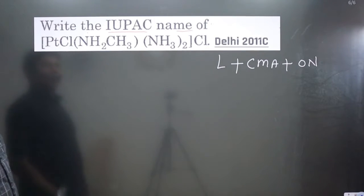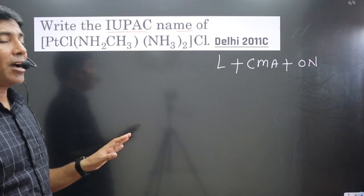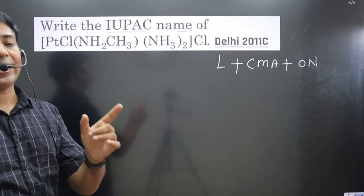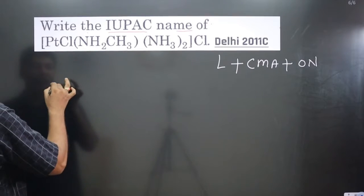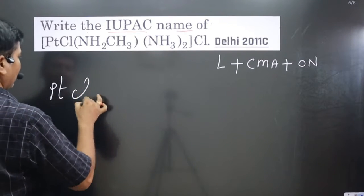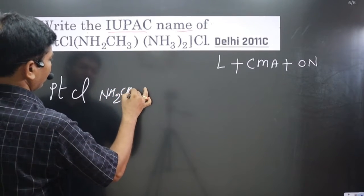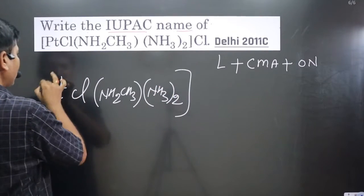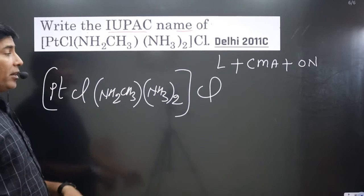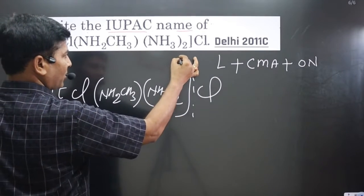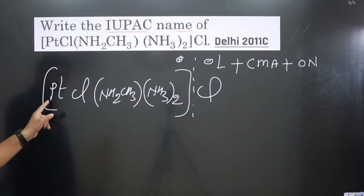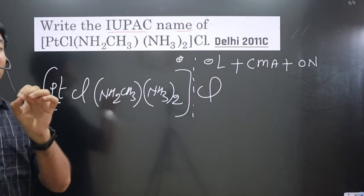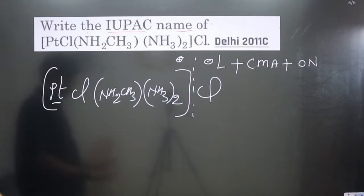Before writing the name, always identify if the central metal atom is present in the cationic complex or anionic complex. We have platinum, with Cl, NH₂CH₃ methylamine, NH₃ twice, and another Cl. We can dissociate the counter ion - one is positive, one is negative. The central metal is present in the cationic complex, so we use platinum's common name as given in the periodic table.